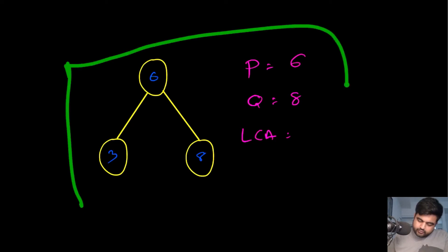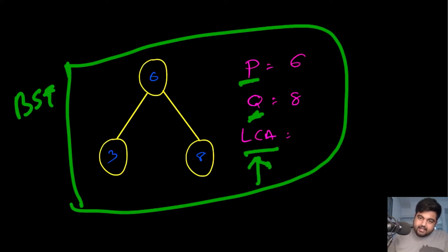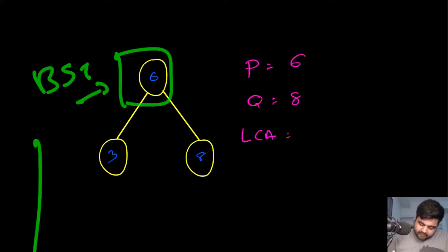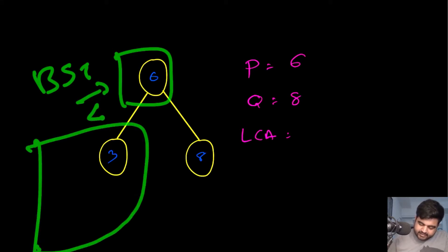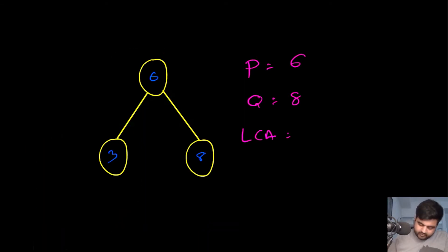Now let's look at the approach we are going to use to solve this problem. I'm going to show a bunch of different binary search trees with some P and Q values, and we'll see what the lowest common ancestor is and why. We already know an important property of a binary search tree: for any given root value, everything on the left subtree is less than it, and everything on the right side is greater than it. We are going to use that property to our advantage.